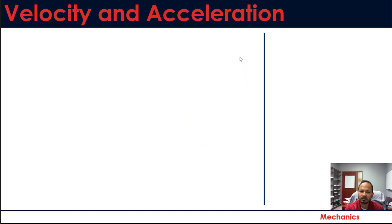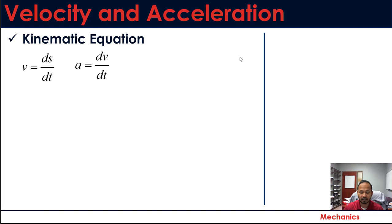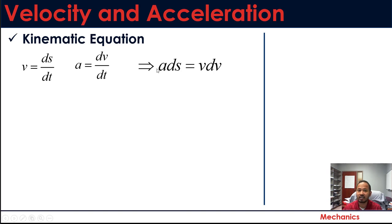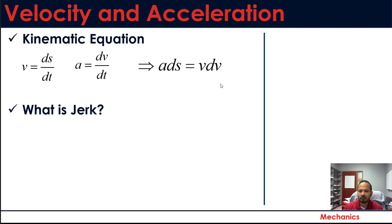Let me also discuss one kinematic equation derived from the definitions of velocity and acceleration: a·ds = v·dv. This equation is widely used when acceleration is a function of position s rather than time. We derive it by rearranging dt = ds/v and substituting into the acceleration definition, giving us that useful form.